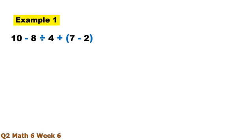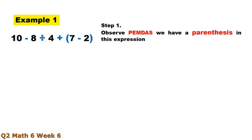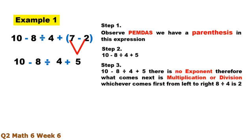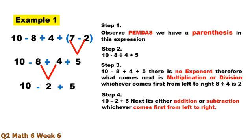Example 1 — look at this expression. Step 1: observe PEMDAS. We have a parenthesis in this expression, so 7 minus 2 equals 5. Step 2: 10 minus 8 divided by 4 plus 5. Step 3: there is no exponent, so what comes next is multiplication or division, whichever comes first from left to right — 8 divided by 4 is 2. Step 4: 10 minus 2 plus 5. Next, addition or subtraction from left to right: 10 minus 2 equals 8, plus 5 equals 13.